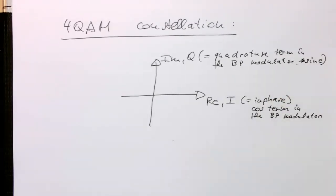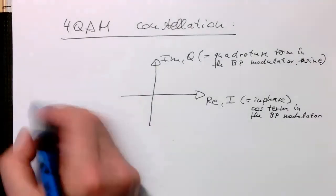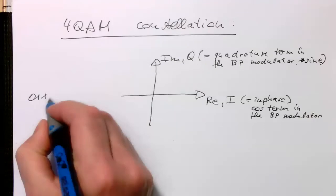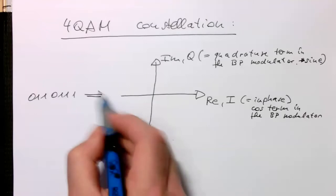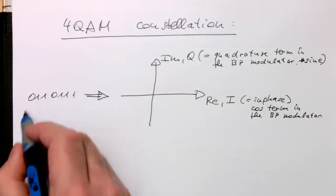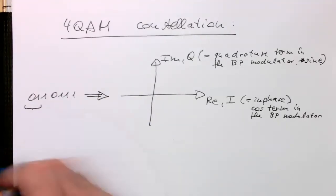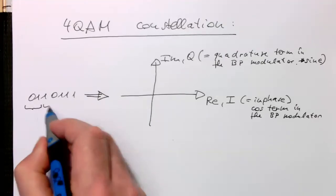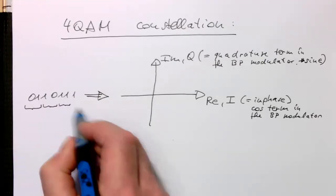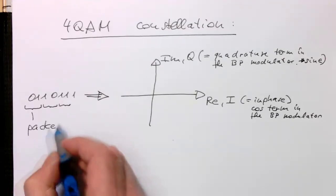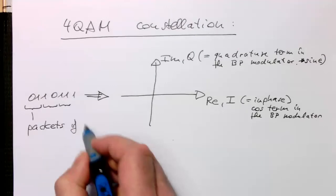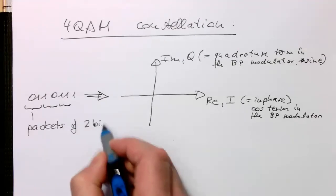So the idea is the following: we take our bit stream, that's our data coming in, our binary data, and we need to turn it into symbols. And so as in the introduction, we take packets of two bits.